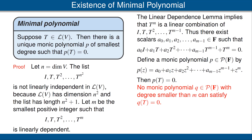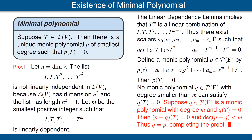No monic polynomial q with degree smaller than m can satisfy q(T) = 0, by the way we've chosen m. The only thing left to prove is that there is no other monic polynomial of the same degree m giving 0. If q is monic of degree m and q(T) = 0, then p − q has degree less than m and (p−q)(T) = 0, forcing q = p. This completes the proof.